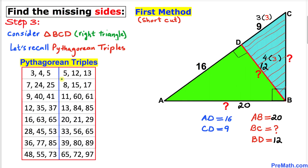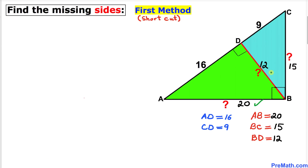In the next step let's focus on triangle BCD. Looking at the values: 9 can be written as 3 times 3, and 12 can be written as 4 times 3. The 3-4-5 combination works here, so the unknown side is 5 times 3, which is 15. Thus BC turns out to be 15 units.